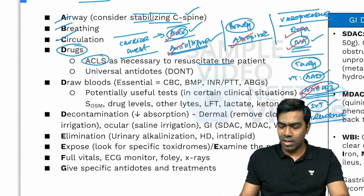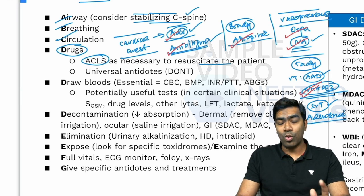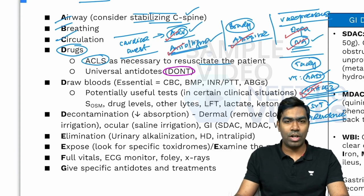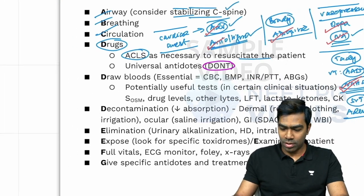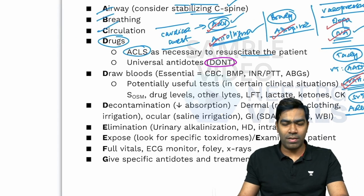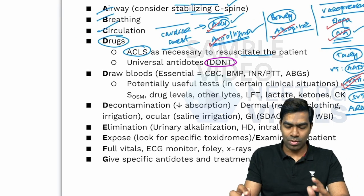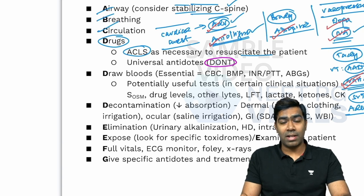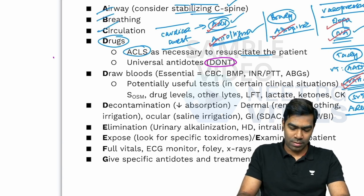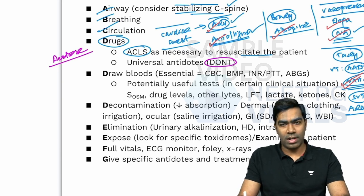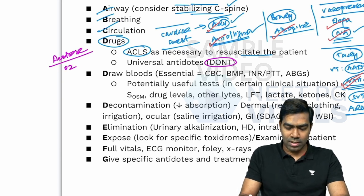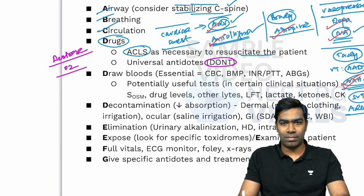Apart from that, you can consider the usage of universal antidotes, remembered by the mnemonic DONT. These drugs should always be available in your emergency room. D stands for dextrose — in the setting of hypoglycemia you need dextrose. O stands for oxygen — you can consider oxygen in the setting of hypoxemia and tissue hypoxia.